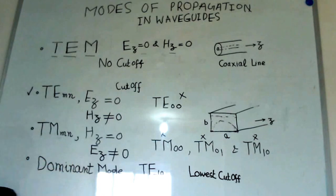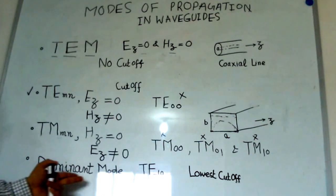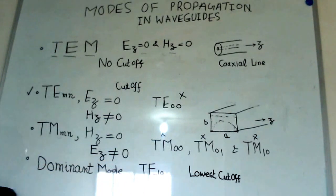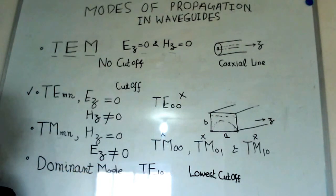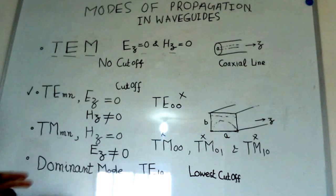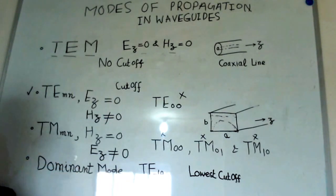For a rectangular waveguide, most of the time we use this dominant mode. The advantage for this dominant mode is, since it is having a lowest cutoff, waveguide dimension becomes small even for low frequencies. The other advantage is you get a wide range of frequencies without interference.